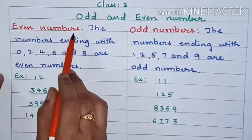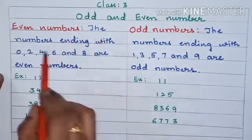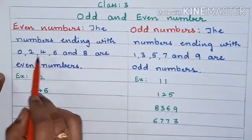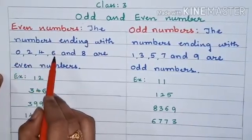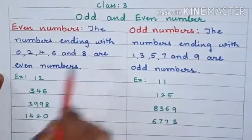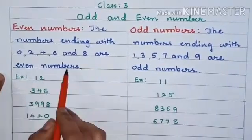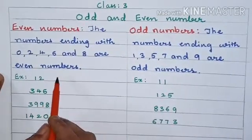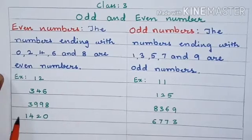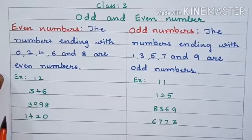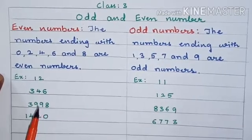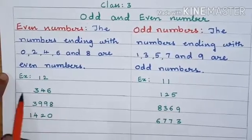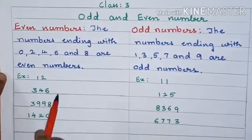What is an even number? The numbers ending with 0, 2, 4, 6, and 8 are even numbers. Or else we can say, when we divide the number by 2, if there is no remainder — meaning the remainder comes 0 — then the number is even.